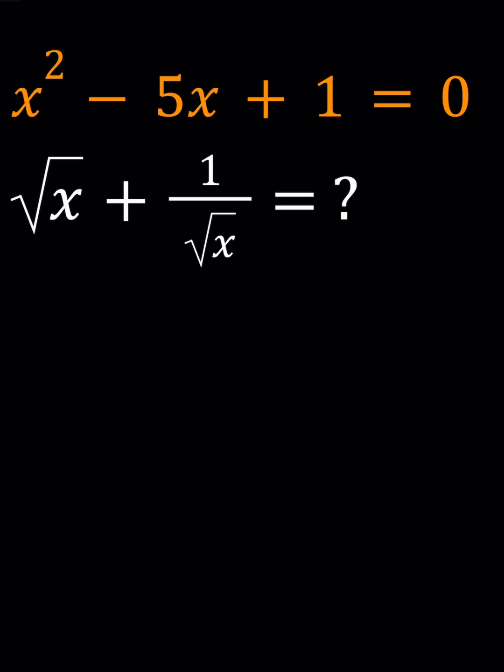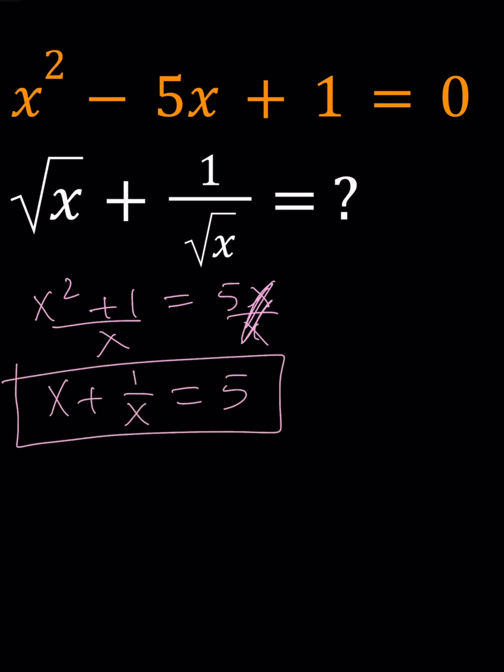And this is what it looks like. I'm going to isolate the 5x and then divide both sides by x. That's going to give me x plus 1 over x equals 5. Nice. That's something that I'd like to use.